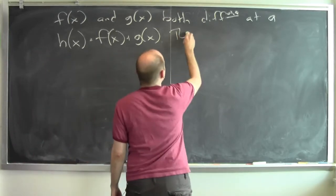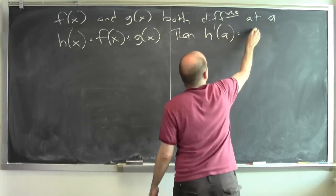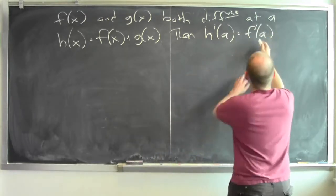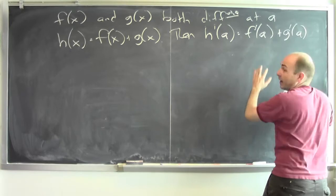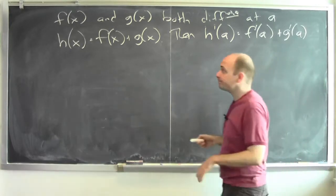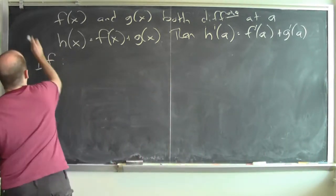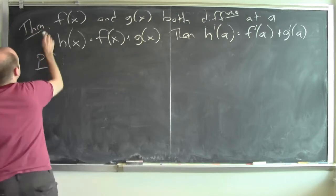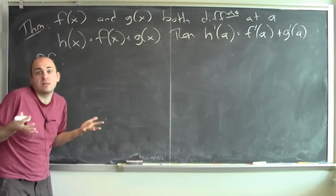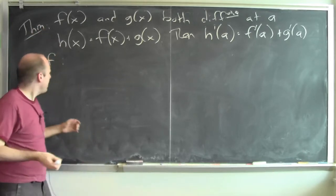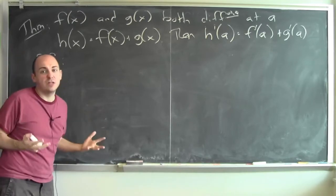Then h prime of a is just the sum of the derivative of f at a and the derivative of g at a. Now this is really a theorem — a theorem that tells me how to compute the derivative of a sum of functions. And how do I prove something like this? I just go back to the definition of derivative.